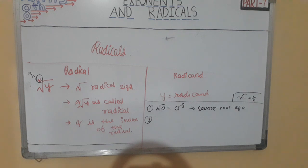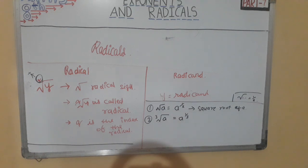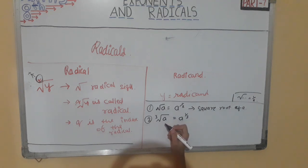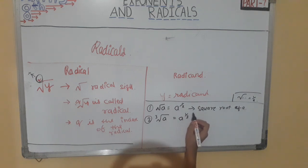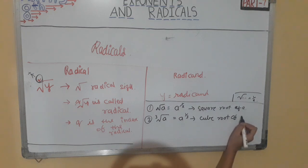Second example: if a question like cube-root of a is given, you will write it as a raised to 1 by 3. Because at the place of q, if there is any single positive number — without being in p by q form — you write it as a raised to 1 upon that number. And this is called the cube root of a.